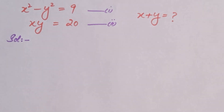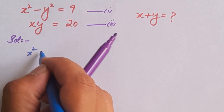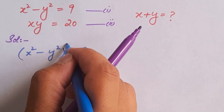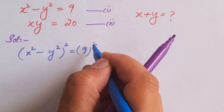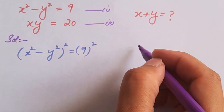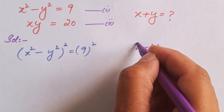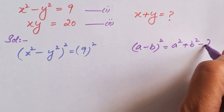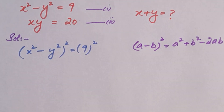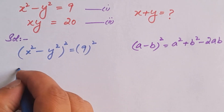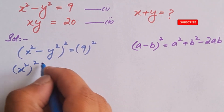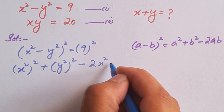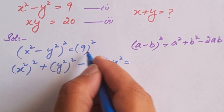We will use equation 1 first, which is x squared minus y squared is equal to 9. We are going to take the square of this equation 1 on both sides. So the left-hand side becomes an algebraic identity which is (a minus b) whole squared, and this is equal to a squared plus b squared minus 2ab. So we can write this expression as x squared whole squared plus y squared whole squared minus 2 times x squared times y squared, is equal to 9 squared, which is 81.